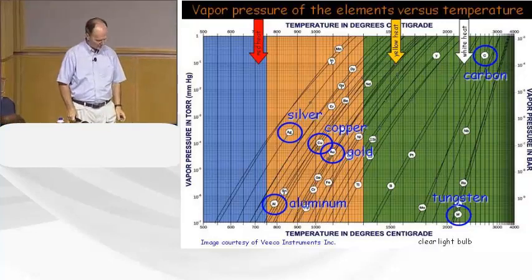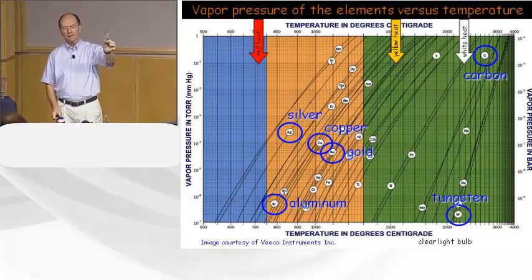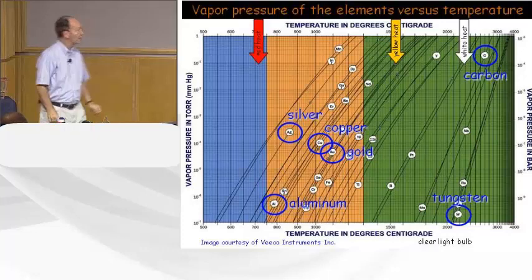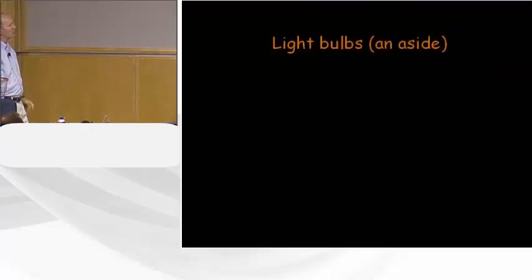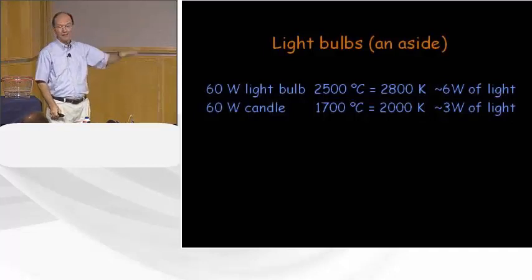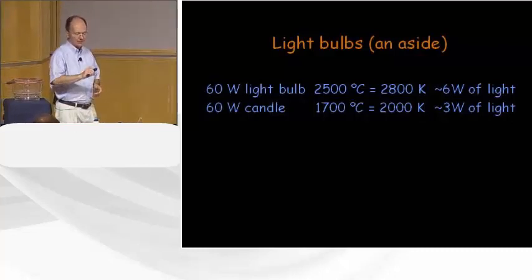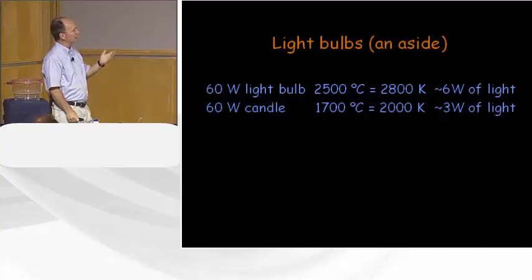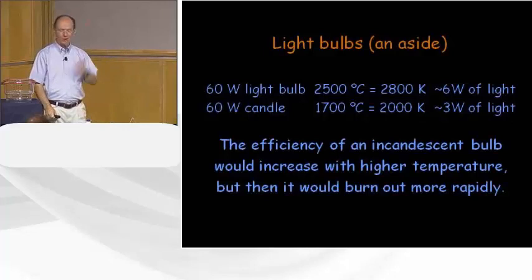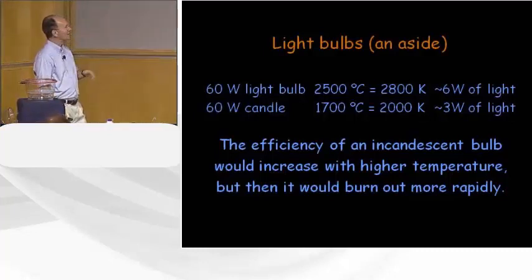I have a clear light bulb here — you can come up and look at it. It's got a fine tungsten filament wound into a helix for more surface area. A light bulb operates at about 2,500°C or 2,800 Kelvin and gives off about 6 watts of the 60 watts we put in as light — all the rest is heat. That's why we're replacing incandescent bulbs with fluorescents and LEDs, which give off more of the input energy as light. A 60-watt candle only gets about 3 watts as light and 57 as heat.